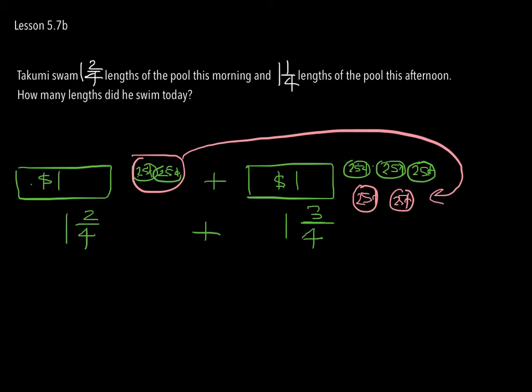Now what do I have here? Well I have one, two, three, four, five. I have five-quarters, so I would have one plus one is two and five-quarters.